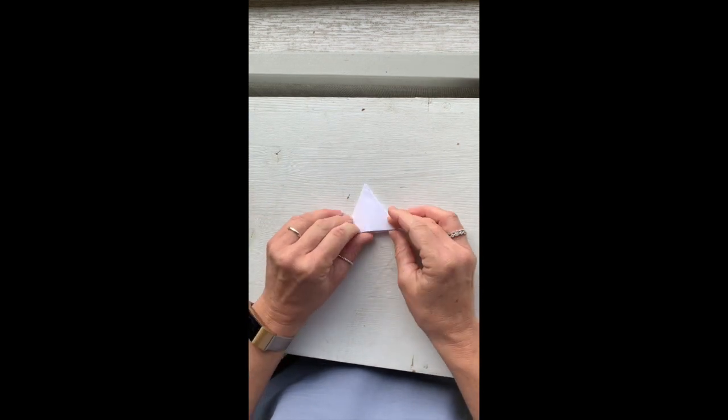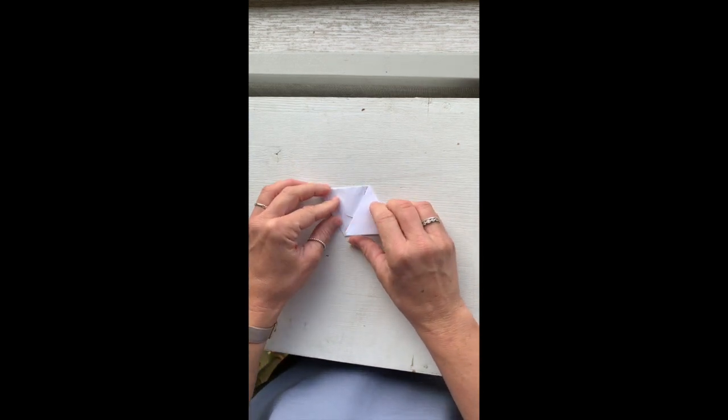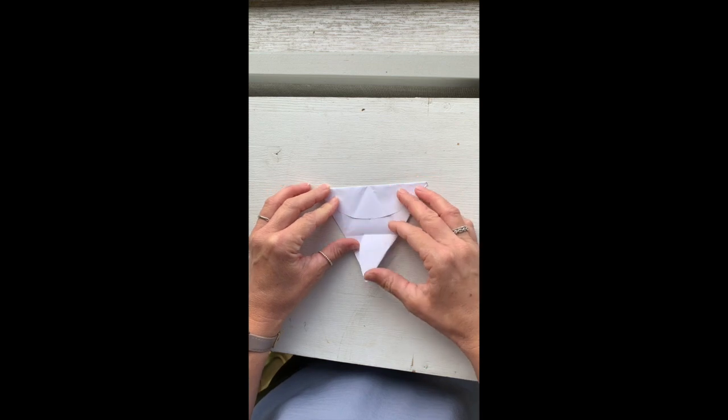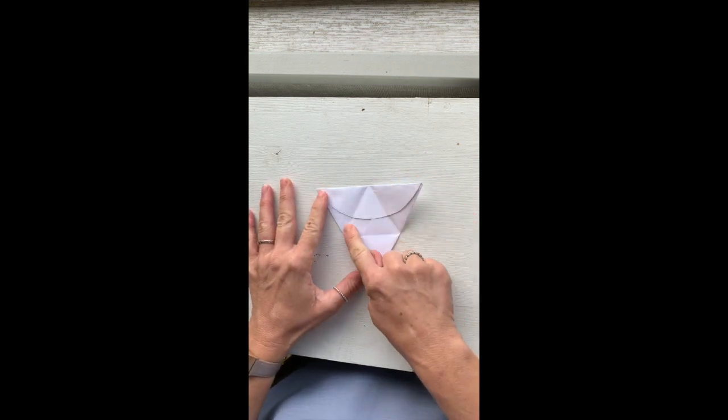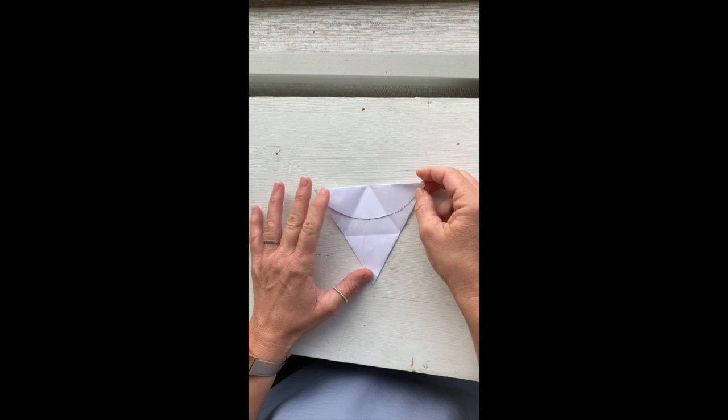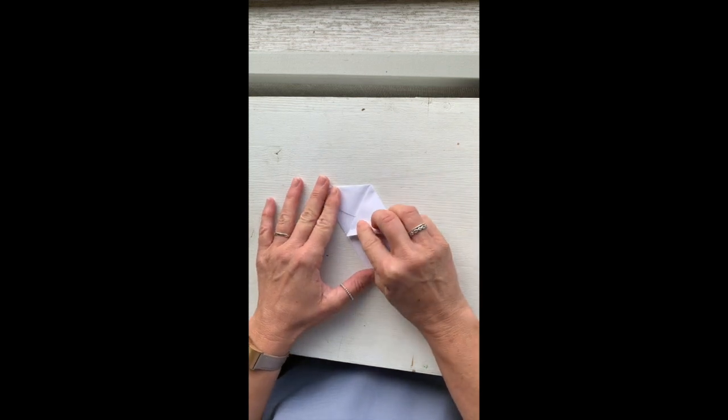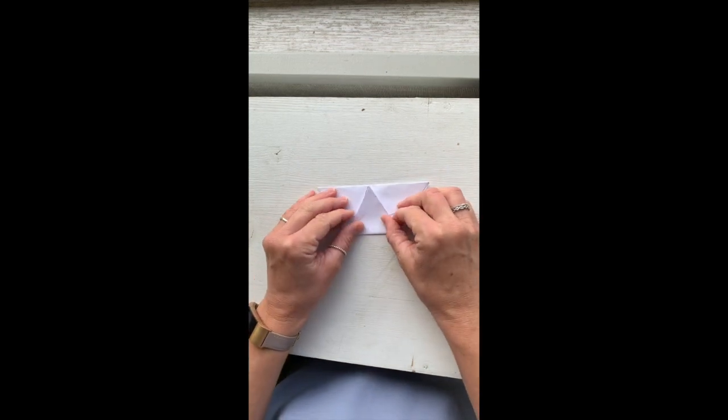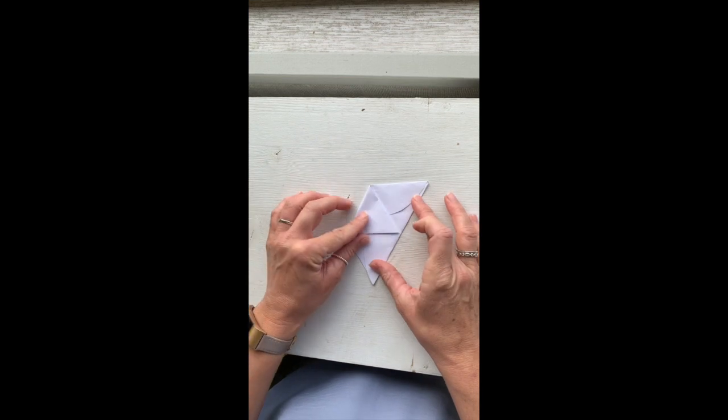But if I open it up again, you're going to see that there's four triangles that make up the larger triangle. Three triangles that make up a trapezoid, and they're all symmetrical, congruent, and absolutely equal.